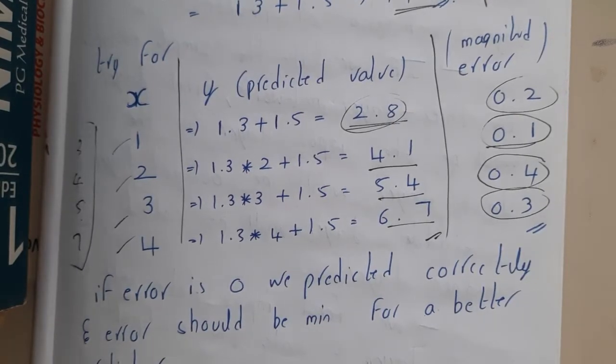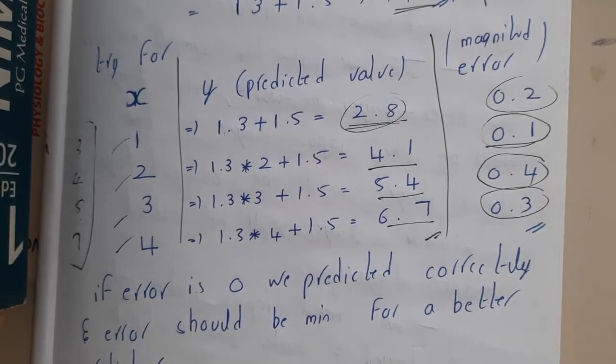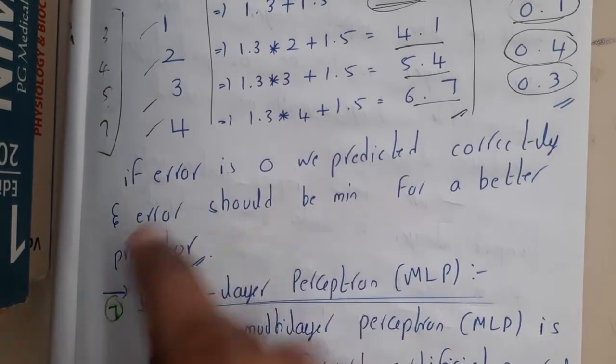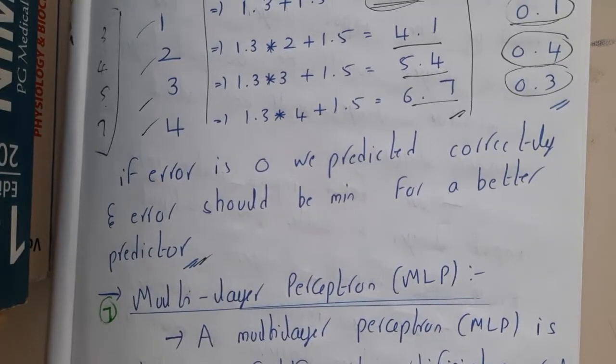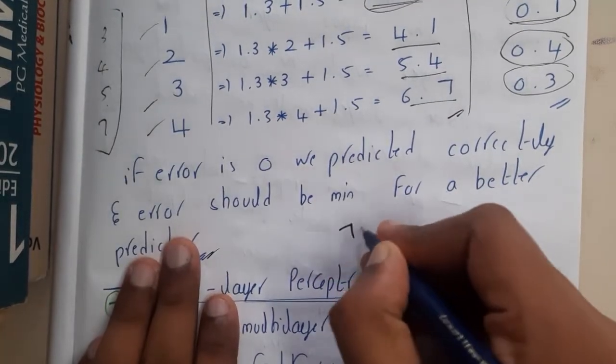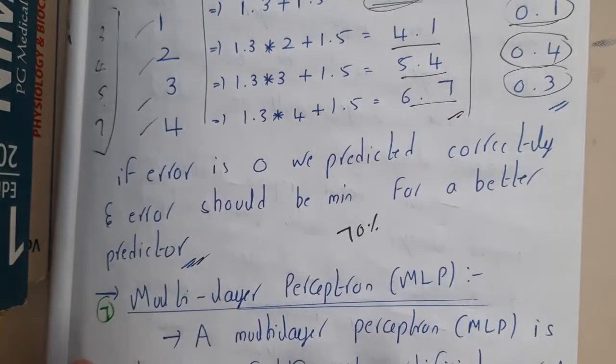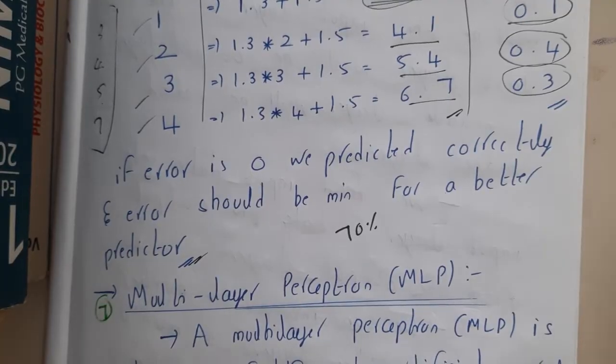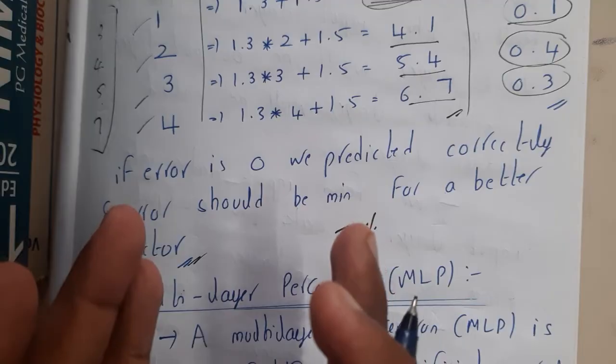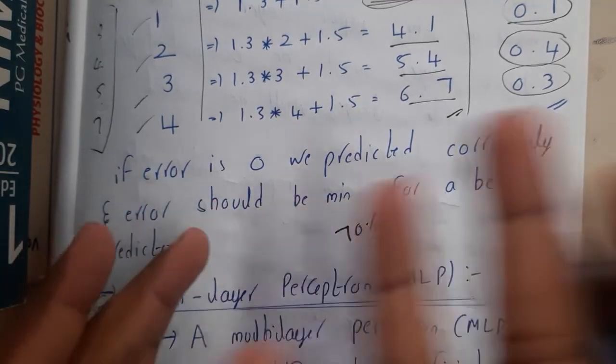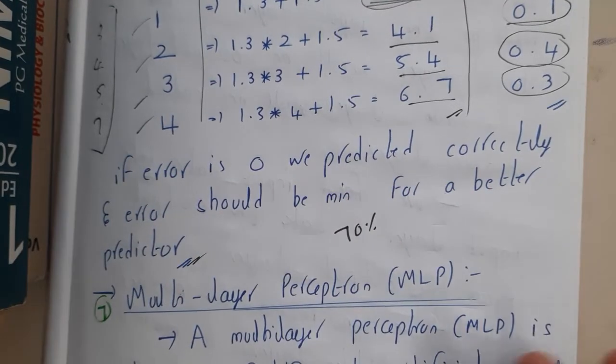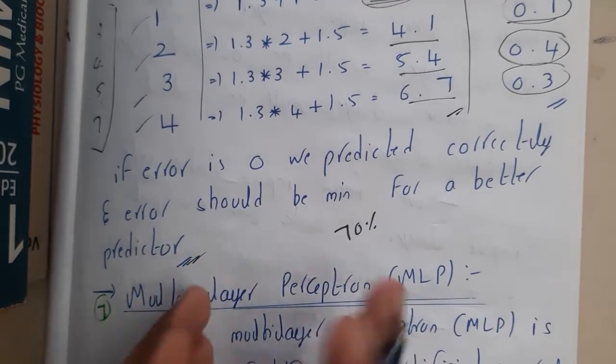If error is 0, we predicted correctly, and error should be minimum for better prediction. Basically 100% accurate predictions cannot be given, I am saying clearly. Even an advanced machine learning program can reach up to 70 to 80 percent accuracy. There is not a chance of 99.7% or anything if the data is not defined in itself. If you are giving the existing data it can recognize. If you are giving 100% new data, there is a 70 percent chance or 80 percent chance at max in giving accurate answers.